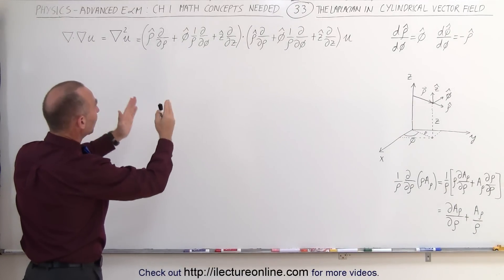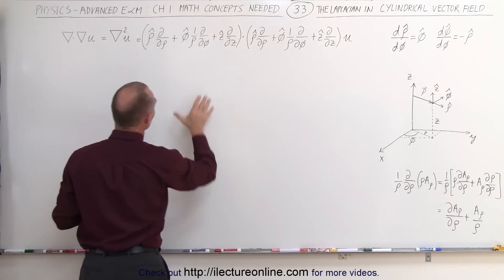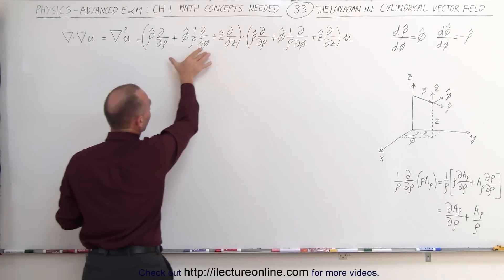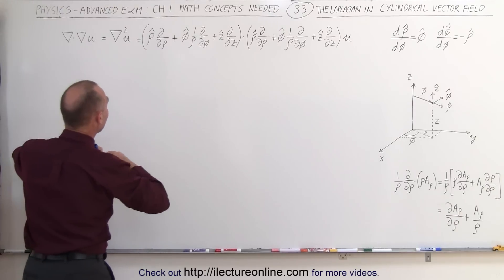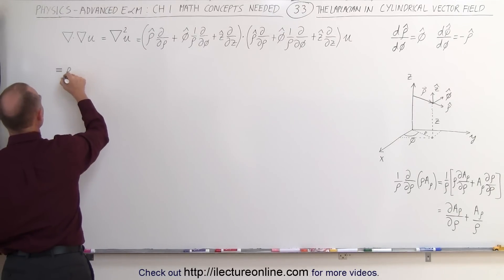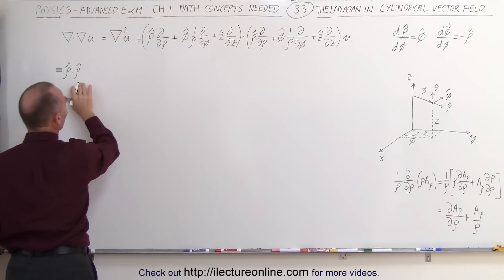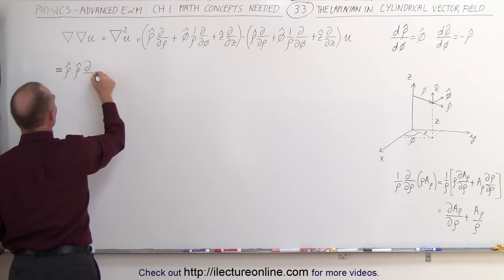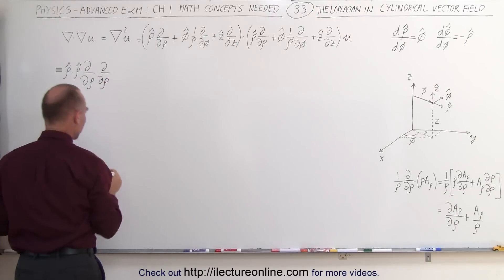We're going to show what this looks like by simply multiplying through. There are three terms in each del operator, so we'll end up with nine terms in total. The first one will be the ρ unit vector dotted with the ρ unit vector, which is equal to one, times the partial with respect to ρ, times the partial with respect to ρ.